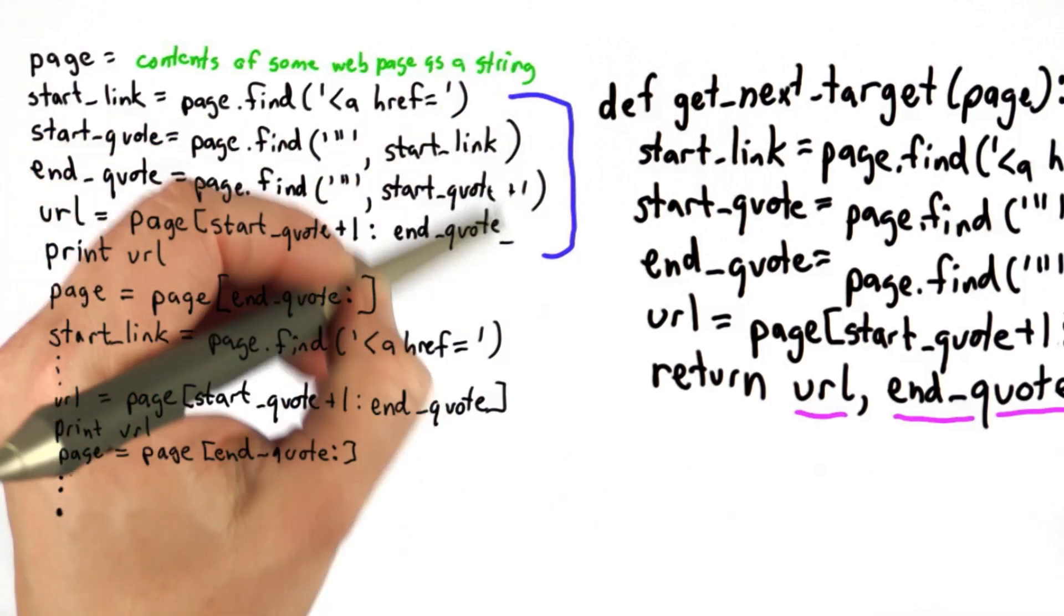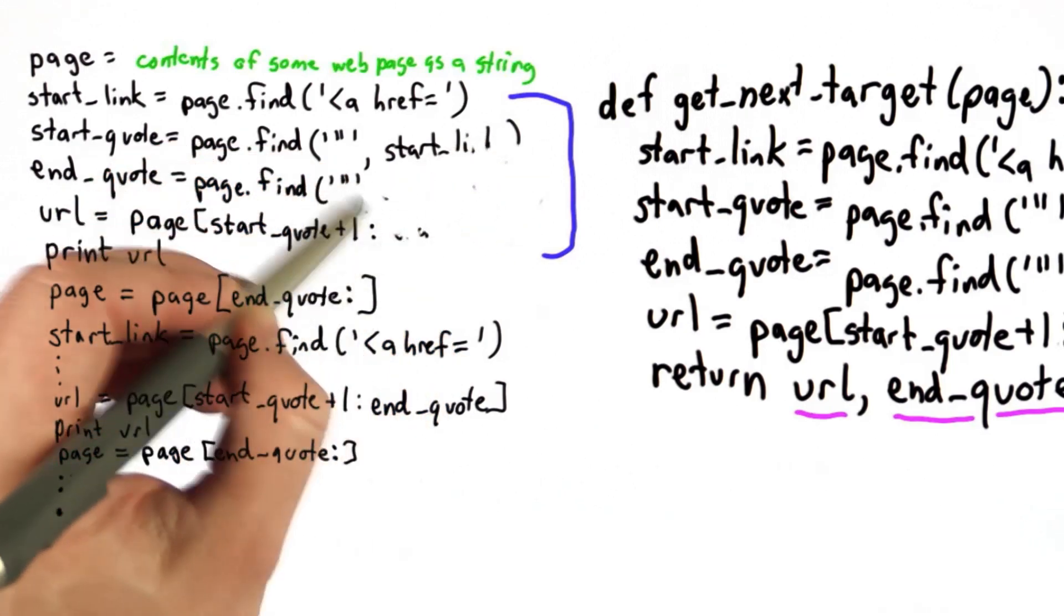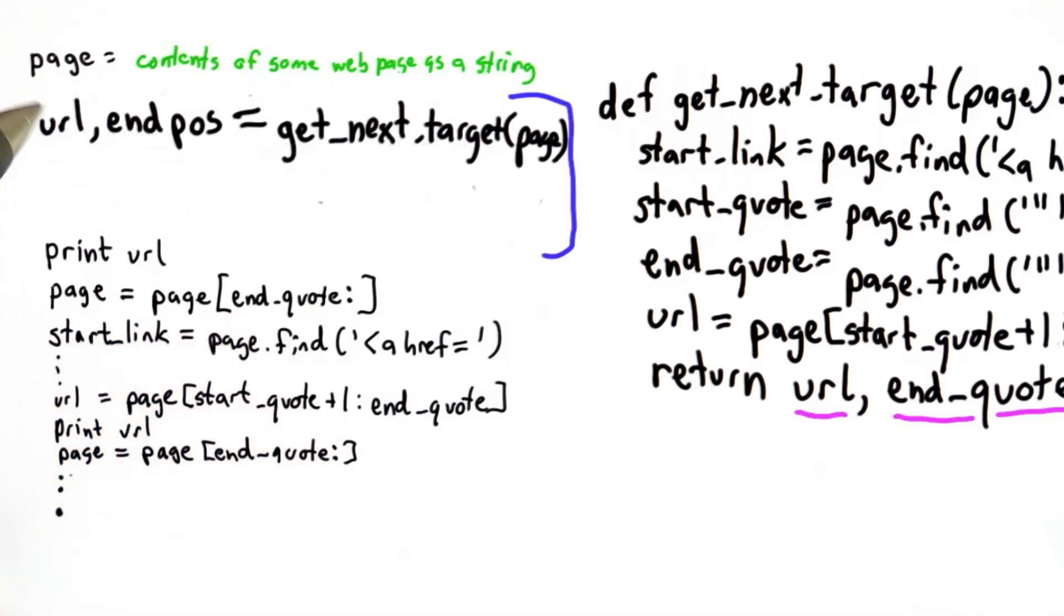So now instead of having all this code, we're going to call the getNextTarget and assign the results. So now we've got the value of URL, which we do want to print out. So we're still going to print that out as before.